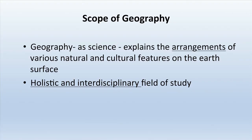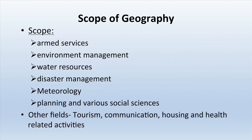What is the scope of geography? Geography has lots of scope in different fields because it is a science that explains the arrangements of various natural and cultural features on the earth surface. It is a holistic and interdisciplinary field of study. The scope ranges from armed services to environmental management, water resources, disaster management, meteorology, planning, various social sciences, tourism, commuting, housing, and health-related activities.